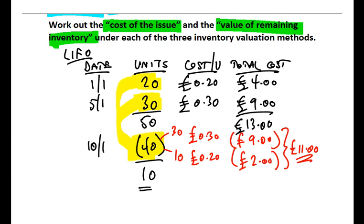Now, the reason we get a slightly higher figure is, can you see, we're actually now using more units at the slightly higher cost per unit. We're taking all 30 units at 30 pence per unit. If you've already worked through FIFO, you'll have seen that we actually only take 20 units at the 30 pence per unit under FIFO. And so we've actually got more units at the more recent higher price, which is why we get a higher cost of the issue.